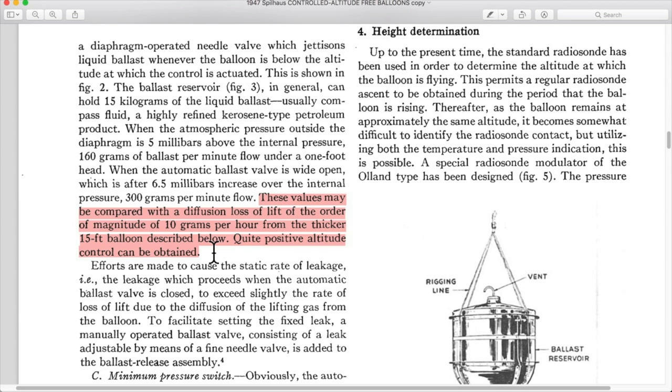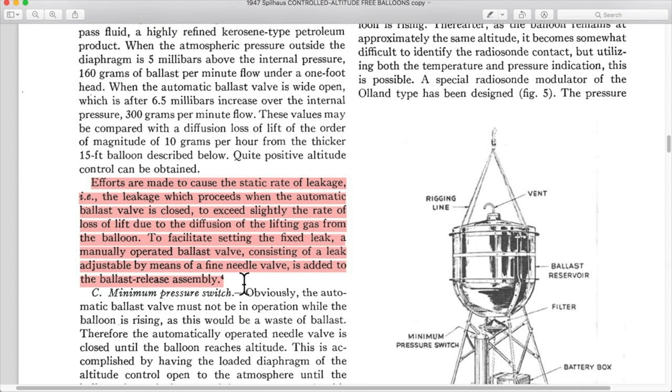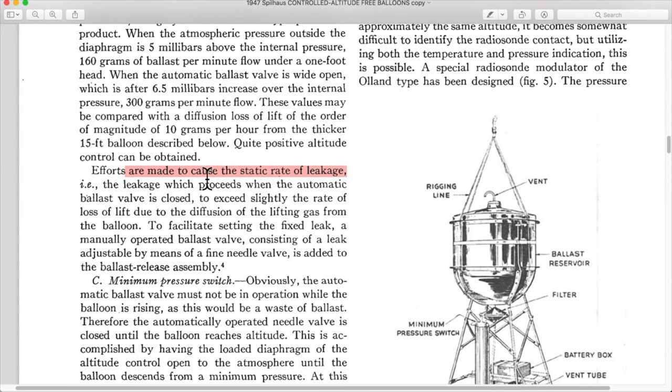Efforts are made to cause the static rate of leakage, i.e. the leakage which proceeds when the automatic valve is closed. They're trying to make it leak all the time, a little bit. The amount of weight lost through those drips slightly compensates for the helium loss from the balloon of 10 grams per hour. It would basically mean that your balloon will fly level and not have to sink all the way down and then back up and down and back up because of the 10 grams per hour diffusion loss.